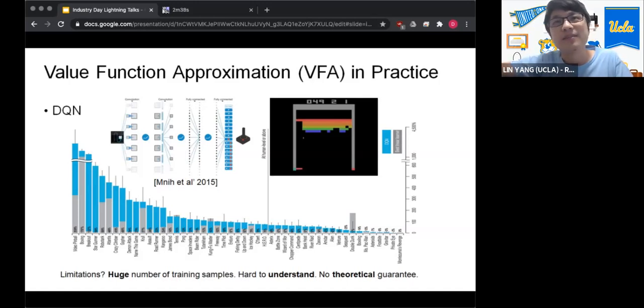However, this simple method has some problems. The first problem is that it really requires a huge number of samples. For instance, with this simple Atari game, human beings can master the game in a matter of minutes. However, this algorithm requires equivalently hundreds of hours of human experience in order to play well.